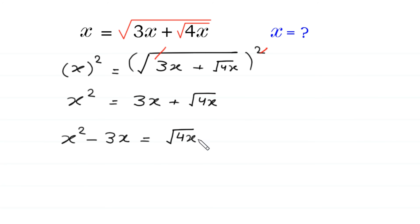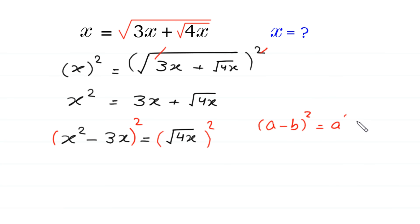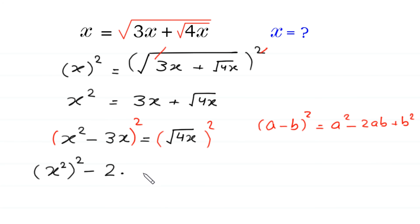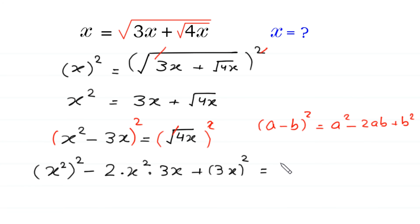Now, to eliminate this square root, we take the square of both sides again. According to the algebraic identity, a minus b whole squared is equal to a squared minus 2ab plus b squared. This x squared minus 3x whole squared is equal to x squared squared minus 2 times x squared times 3x plus 3x squared, equal to 4x, since the square cancels the square root on the right side.